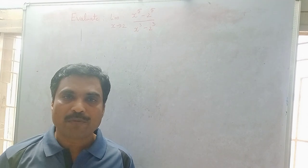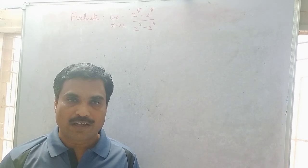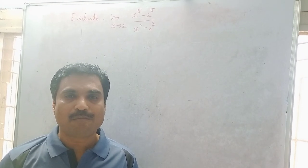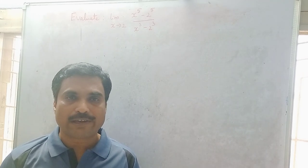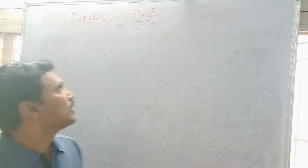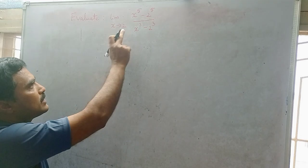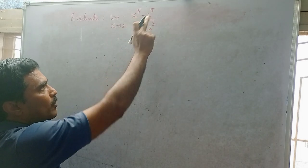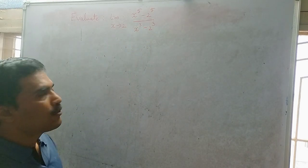Hi, welcome to my channel Yanam Takshasila. In this video I am going to solve a mathematical problem under limits. The problem is: evaluate the limit as x tends to 2 of (x^5 minus 2^5) divided by (x^3 minus 2^3).